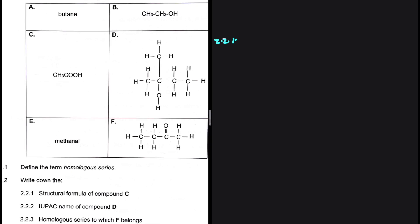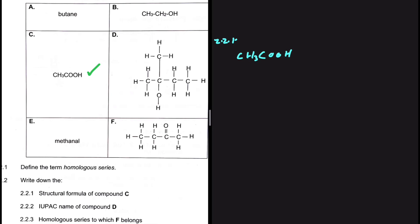Compound C has the formula CH₃, C, two oxygens, and a hydrogen, so let's draw a structure to represent that. We have a carbon with three hydrogens, followed by another carbon, oxygen, and OH. This is the structural formula of compound C — it looks like we have a carboxylic acid.